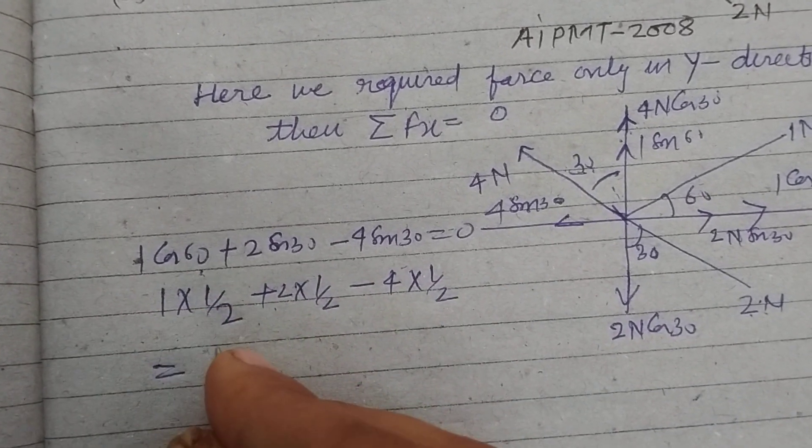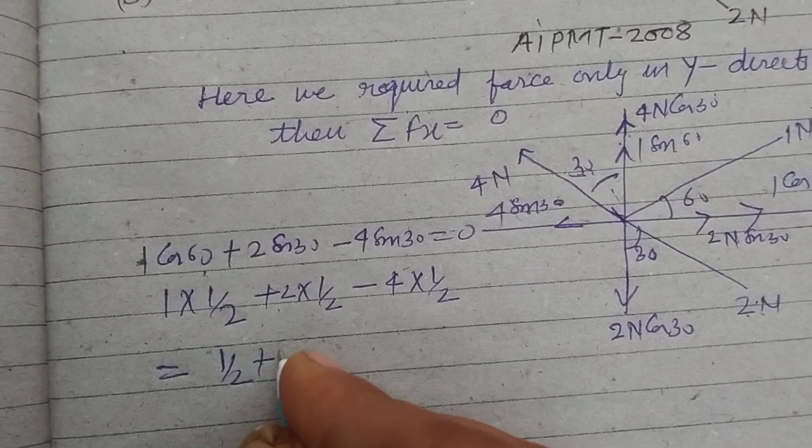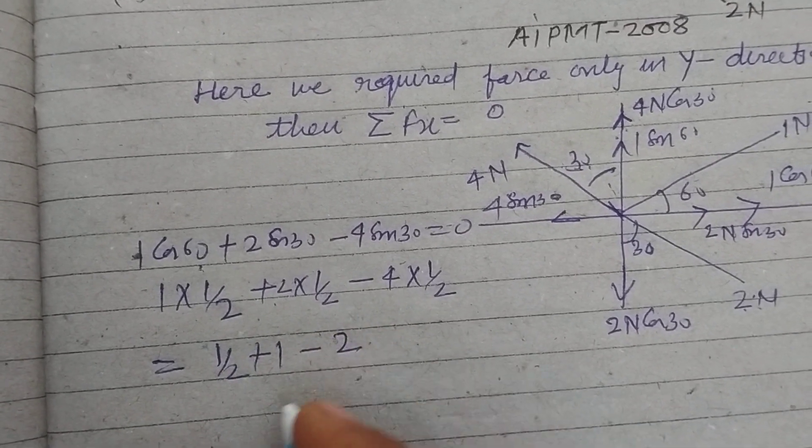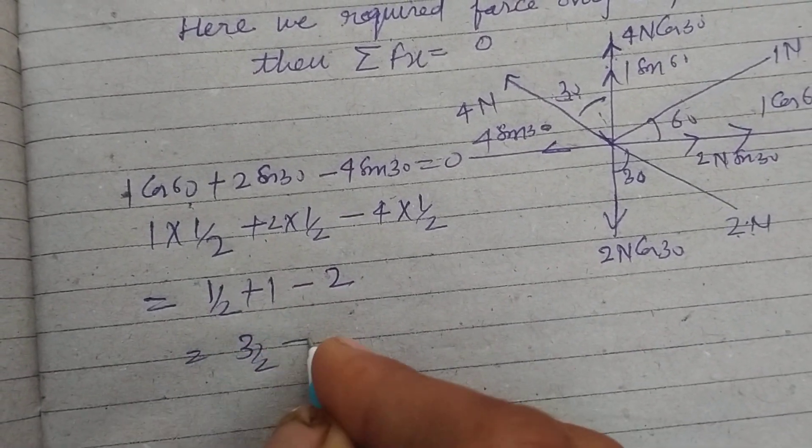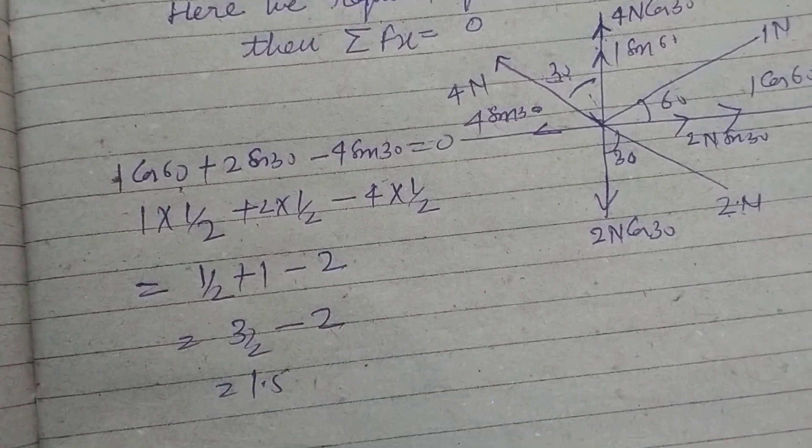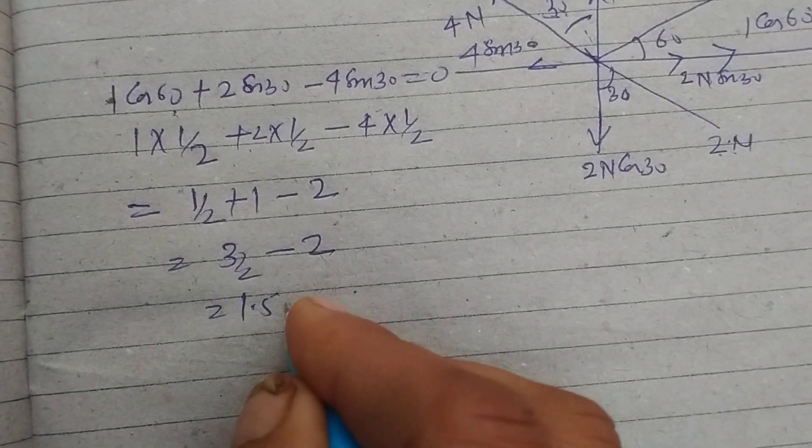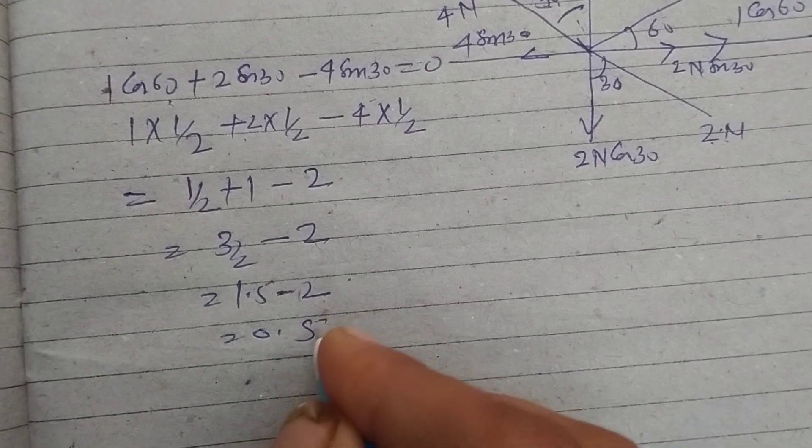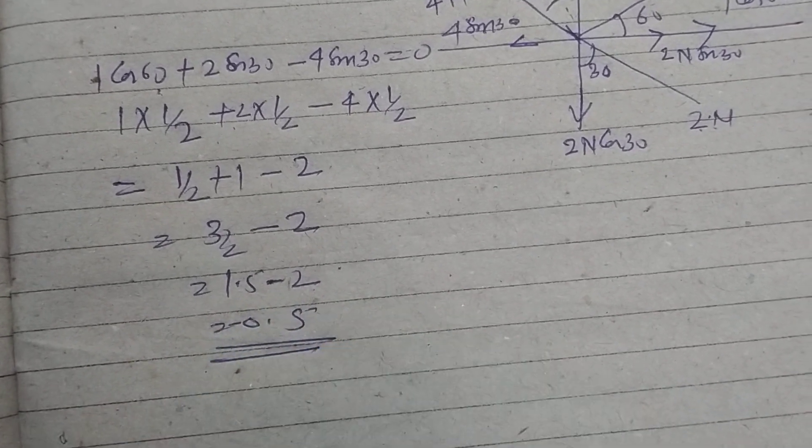So what we got, this is 1 by 2 plus 1 minus 2, and this is 3 by 2 minus 2. This is 1.5 minus 2, this is 0.5. So minus 0.5 should be added.